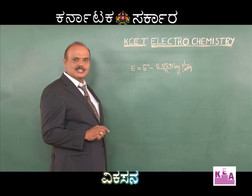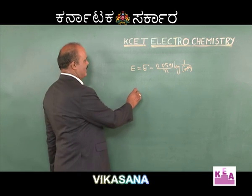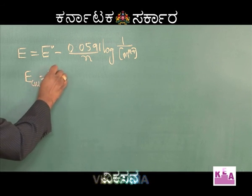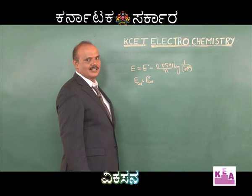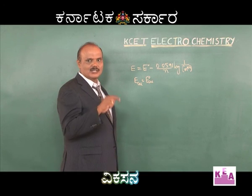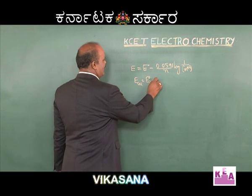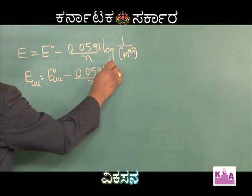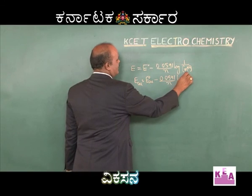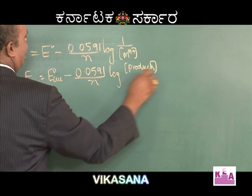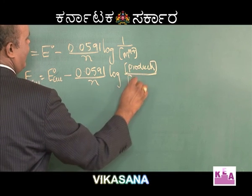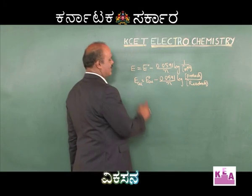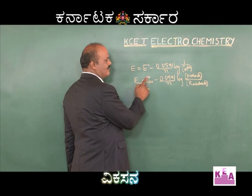By using the same Nernst equation we can also calculate the cell potential at different concentrations. The equation for cell potential is: E_cell = E°_cell − (0.0591 / N) × log([products] / [reactants]). We already know that E°_cell = E°_cathode − E°_anode. This is the Nernst equation used to calculate the cell potential at different concentrations.